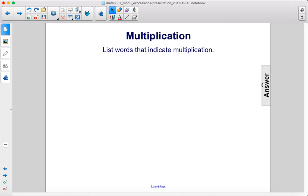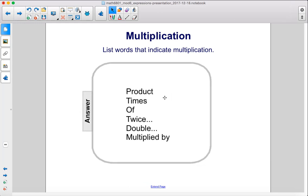List words that indicate multiplication. We have product, times, of, twice, double, and multiplied by.